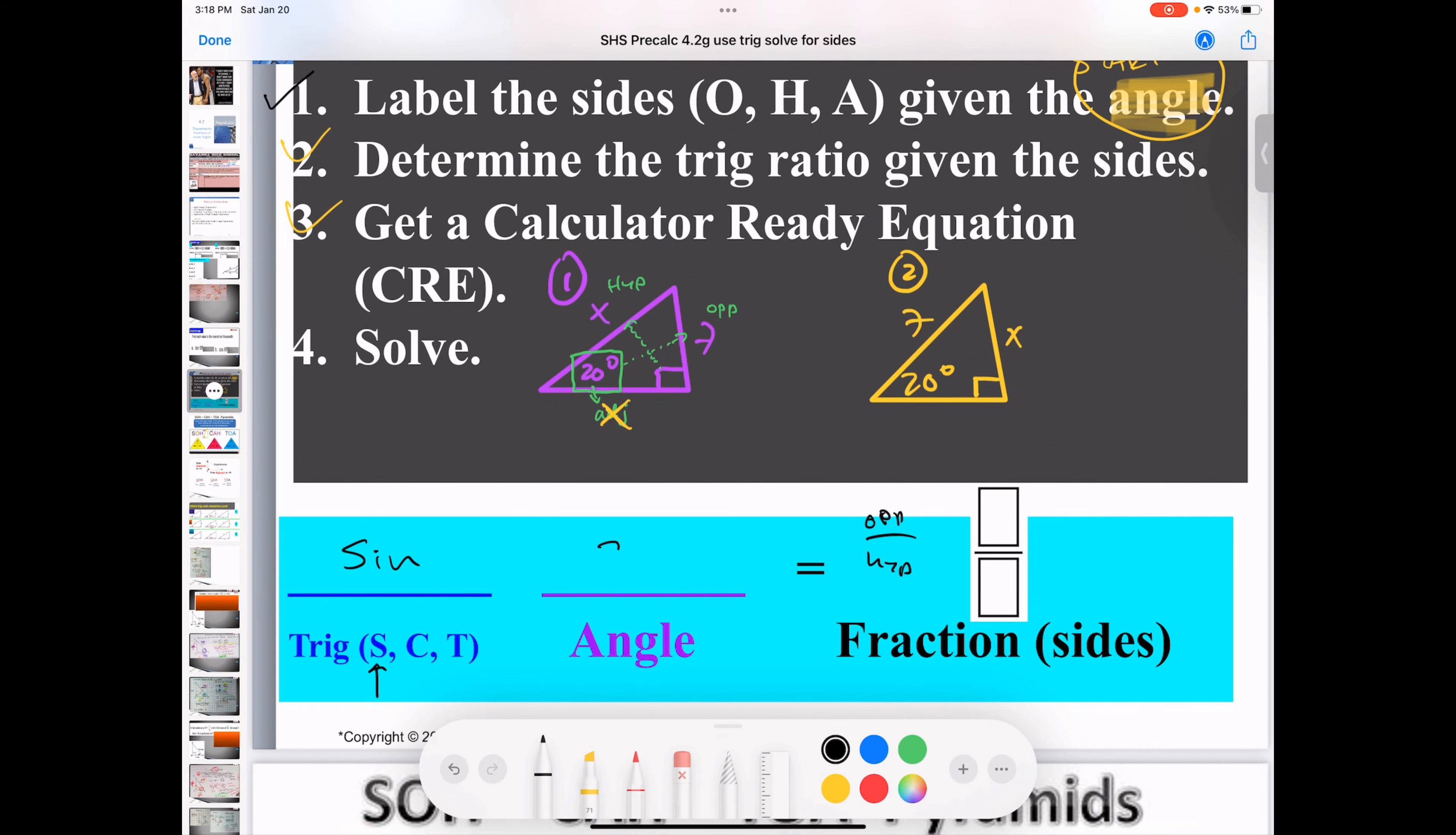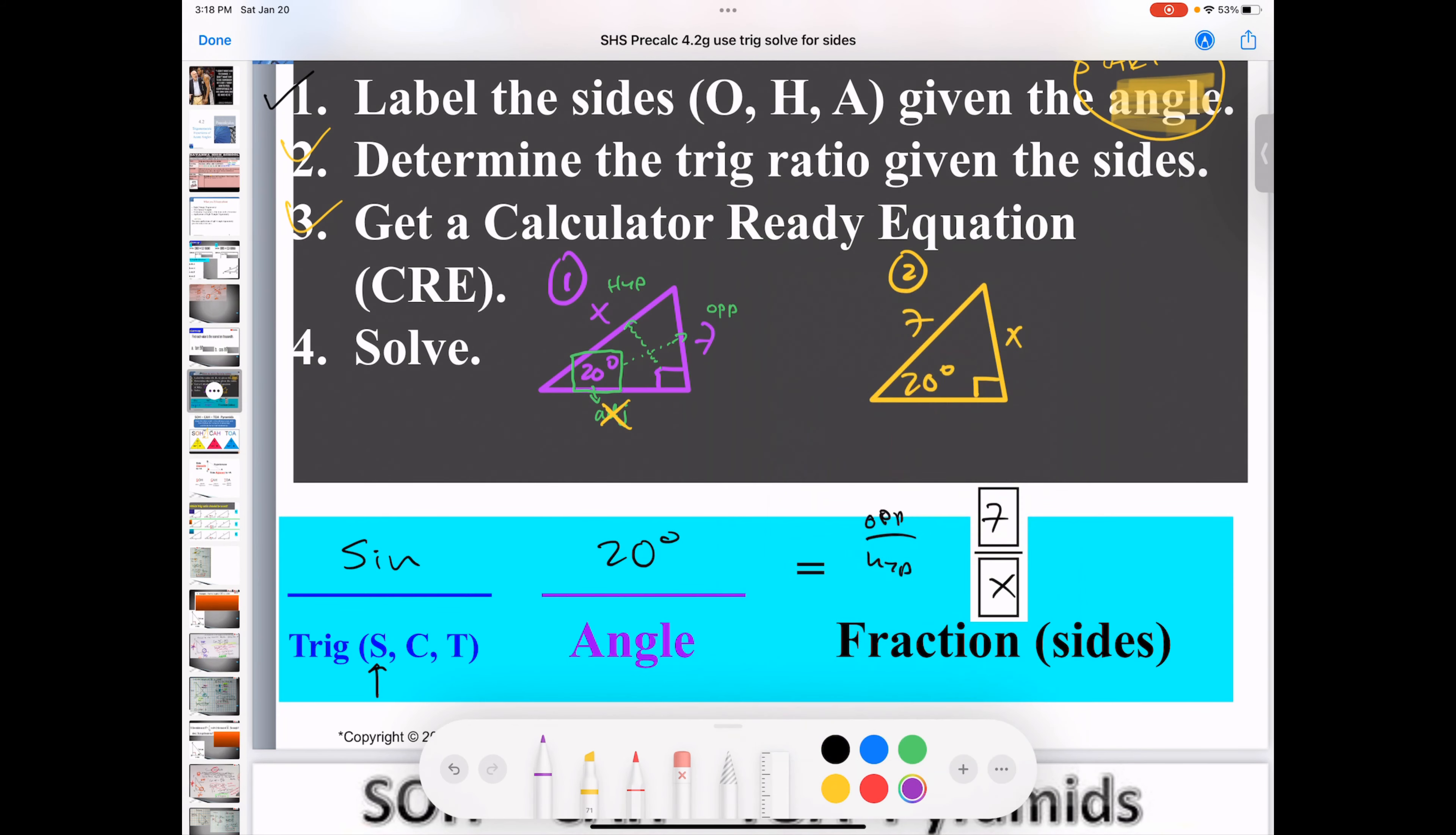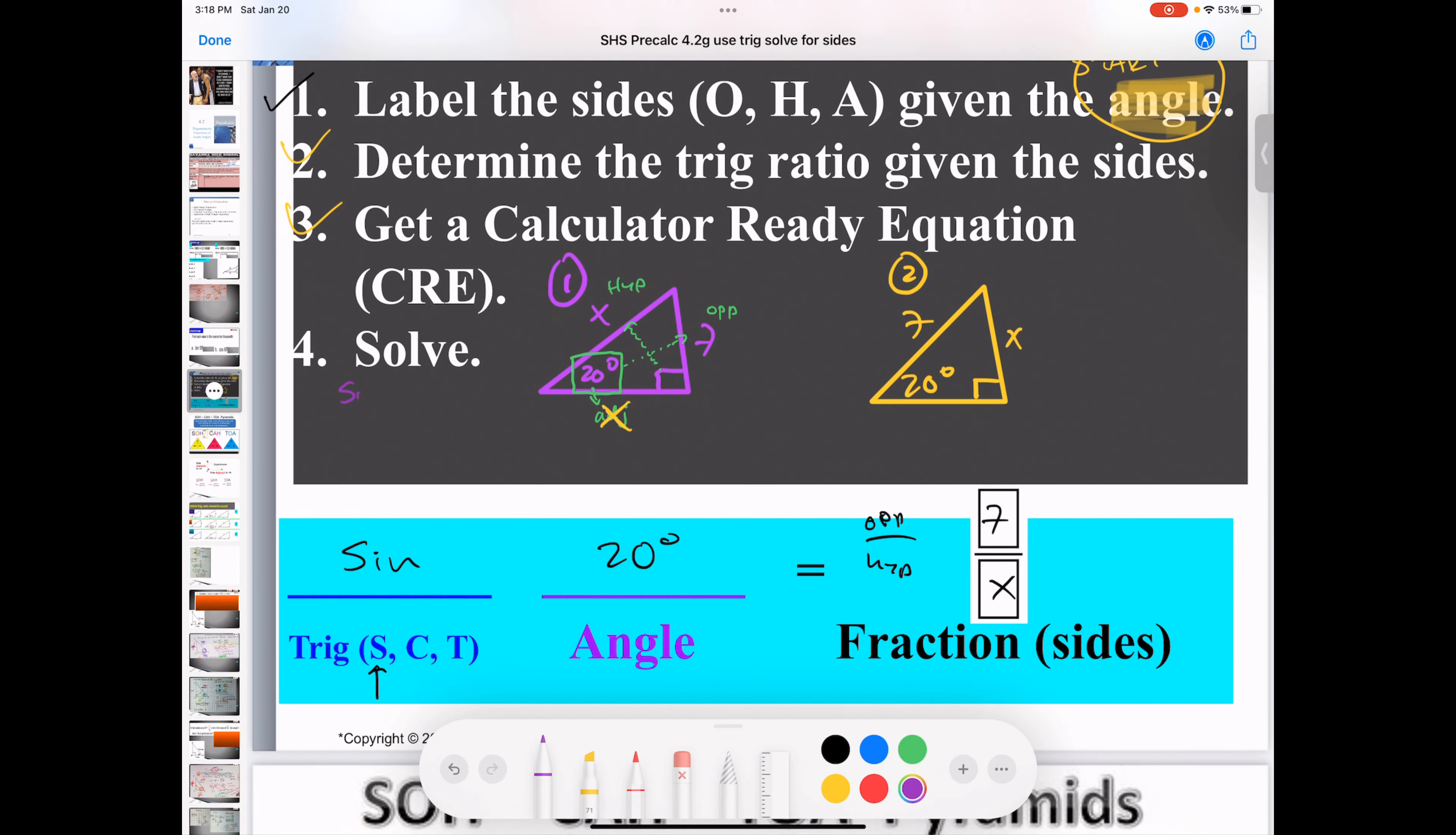Sine of the angle, which is 20 degrees, is equal to 7 over X. Well, how do you solve for that? Let's go back to our purple. So I have sine of 20 degrees equals 7 over X.